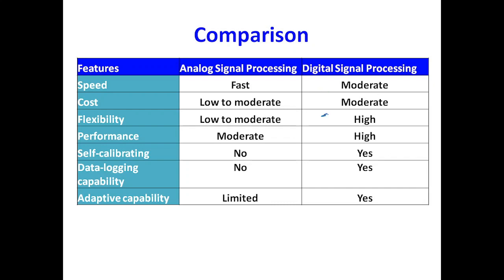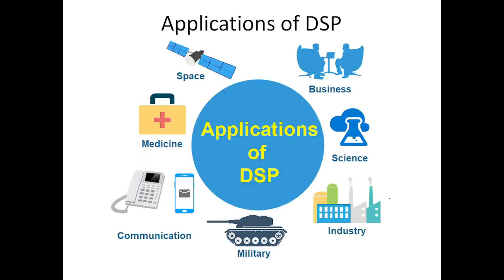Comparing analog and digital signal processing: analog is relatively fast; digital has moderate but processor-dependent speed. Analog cost is low to moderate; digital is moderate. Analog flexibility is low to moderate; digital is very high. Analog performance is moderate; digital is high. Self-calibration is not available in analog but is achievable in digital. Data logging capability and adaptive capability are limited or absent in analog but readily available in digital signal processing.